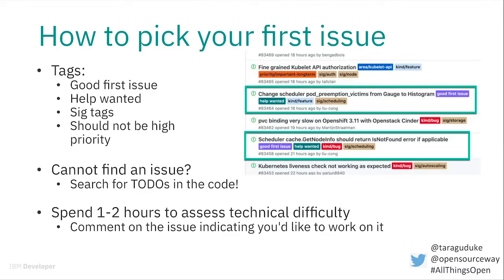If you cannot find any good-first-issue to work on, it's really helpful to search for to-do's in the code. There are more than two or three hundred to-do's, and it's also a great way to learn the codebase. I would keep a list of all potential things you can work on and spend one to two hours assessing the technical difficulty of each one.